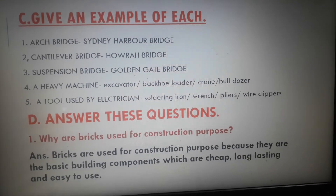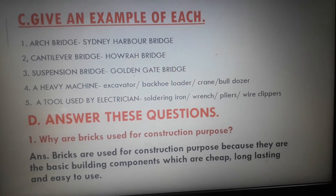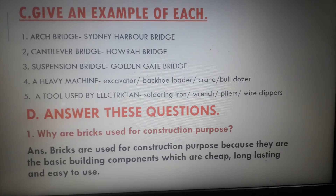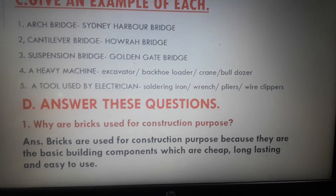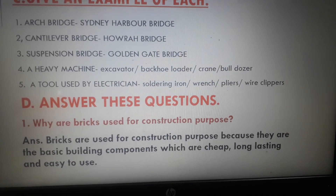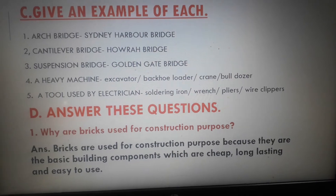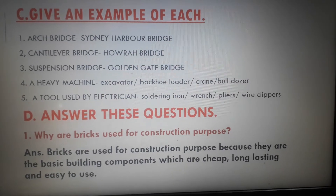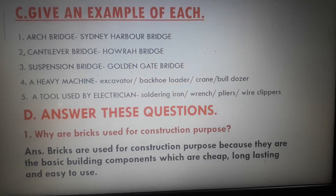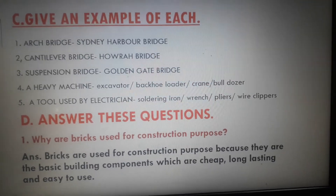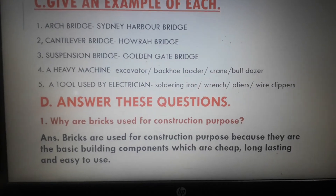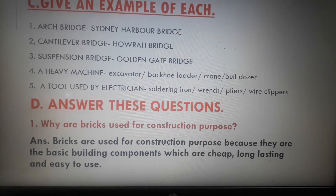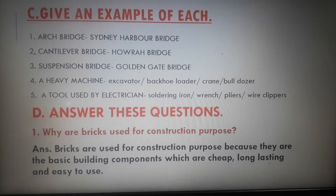Now Exercise C: Give an example of each. Number 5 — A tool used by the electrician. Answer: Soldering iron, wrench, pliers, or wire clippers. You can write any one tool used by an electrician. Exercises A, B and C you have to do in your book — please check your answers with mine.